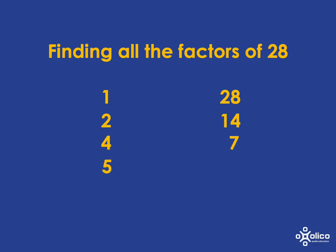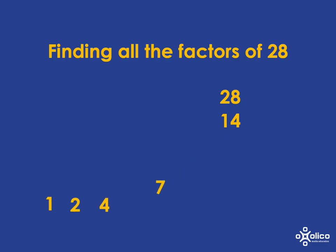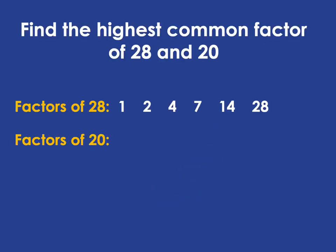We've got 5 — that isn't a factor. We've got 6 — that isn't a factor. We've got 7 — that is a factor, but it's a factor we've already got, so we know we can stop at that point. And then we can just quickly put all our factors in order and write them up here.